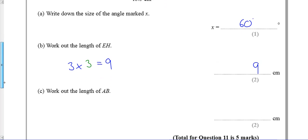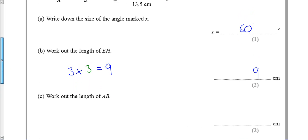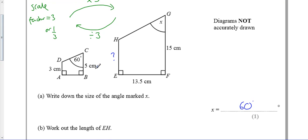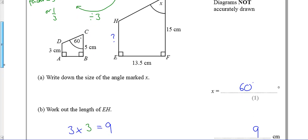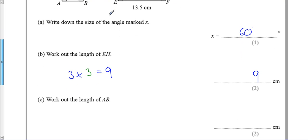Alright, next question asks us for AB, so AB is the bit at the bottom, so this time we've got to get smaller, so we've got to do 13.5 divided by our scale factor of three. I've just got to get a third, and that comes out as 4.5, and that's it.